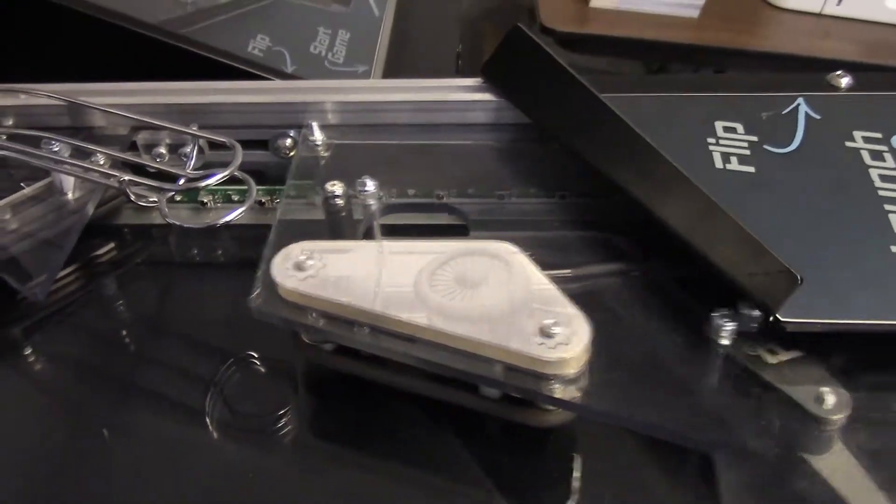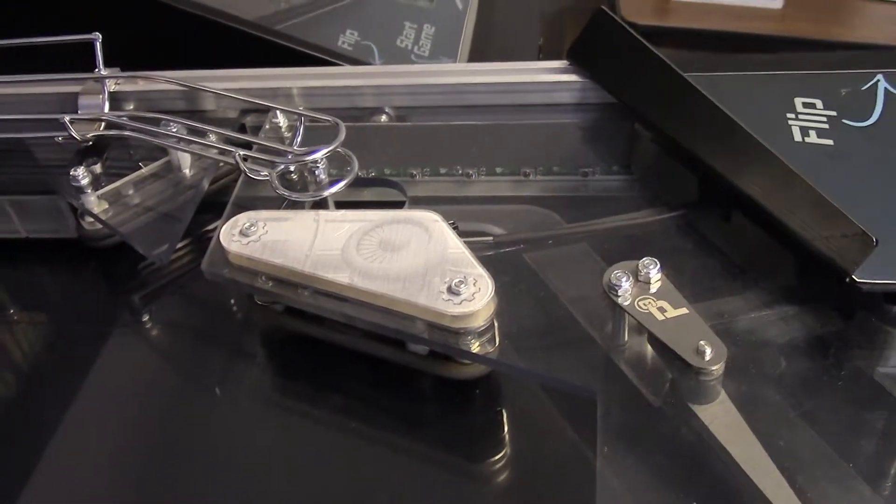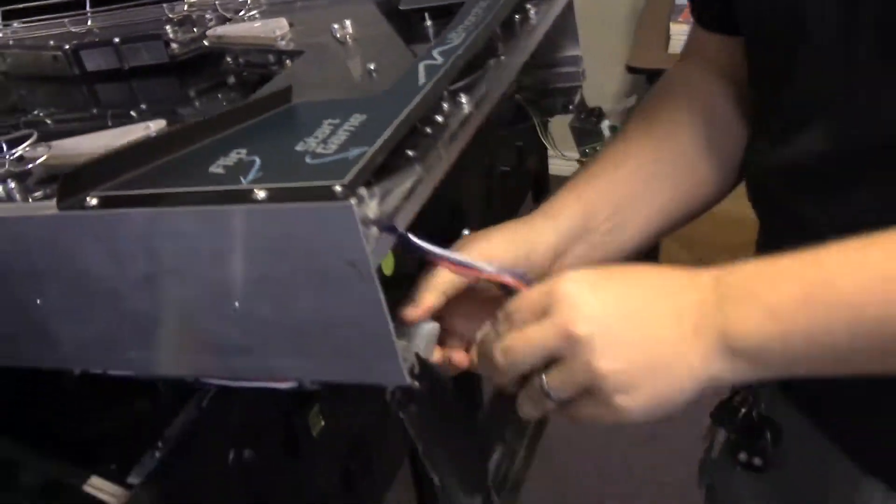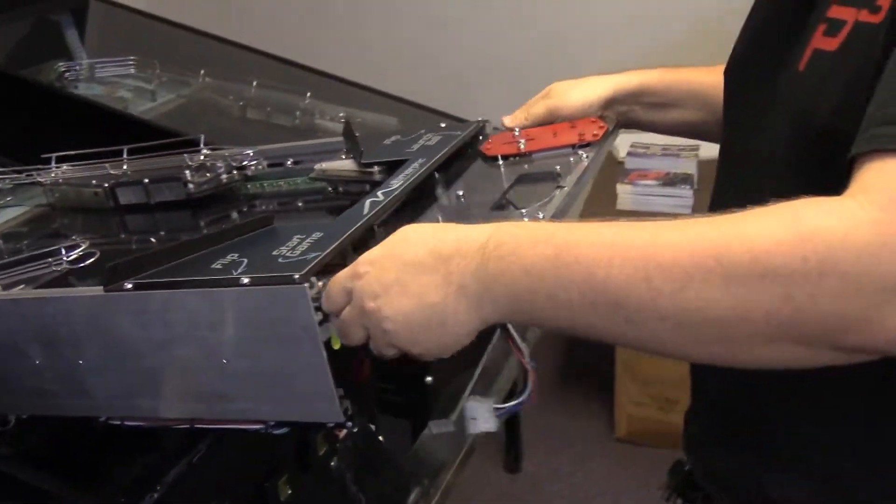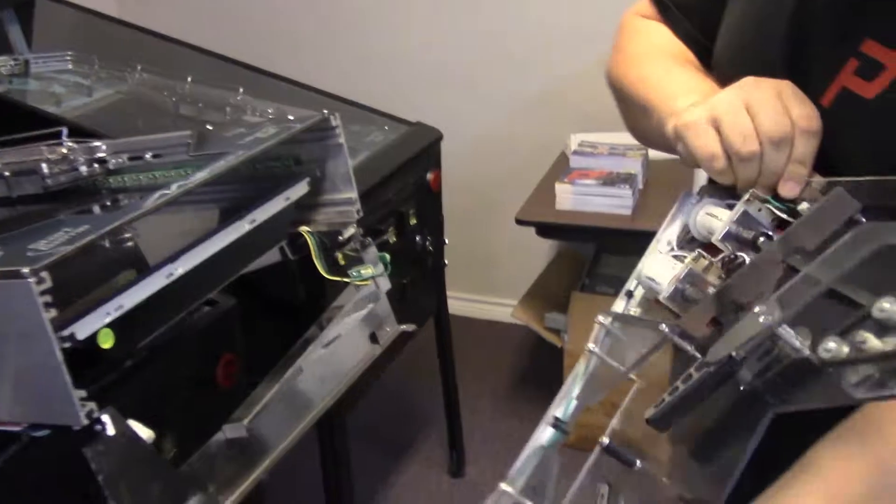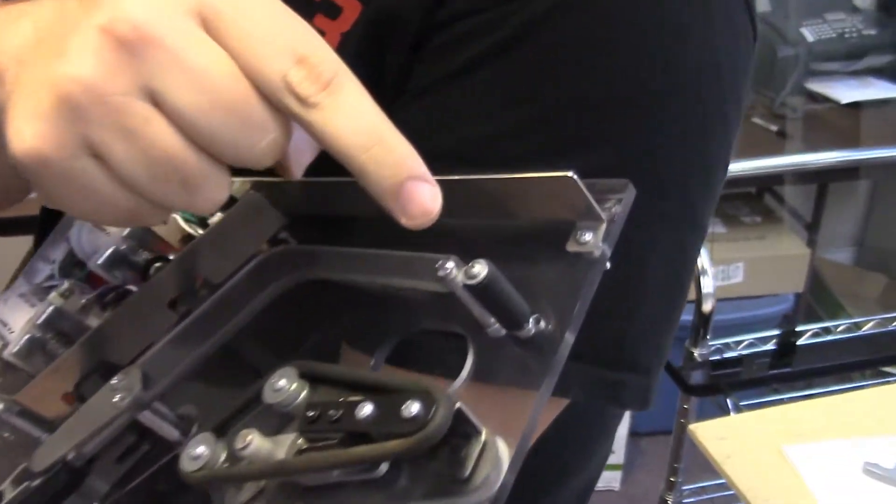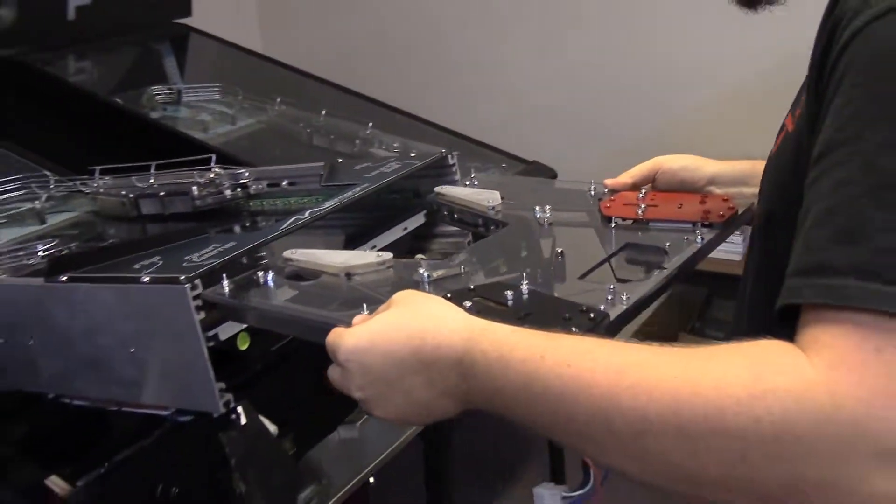we remove the flipper assembly, undo the connector, pull it straight out, and then you would make the changes to just moving this post to that hole. I'm going to leave them where they are for now.